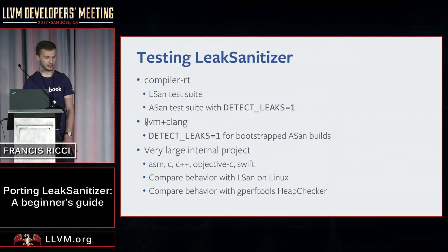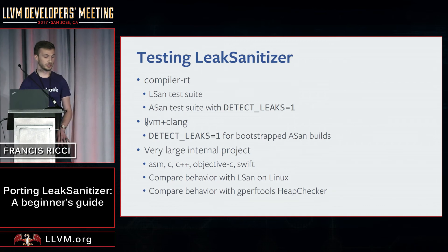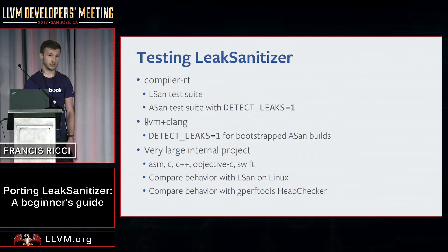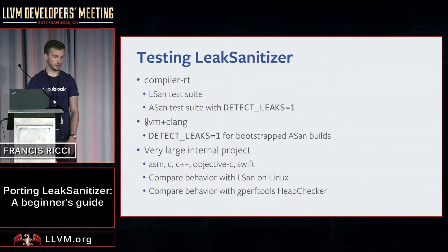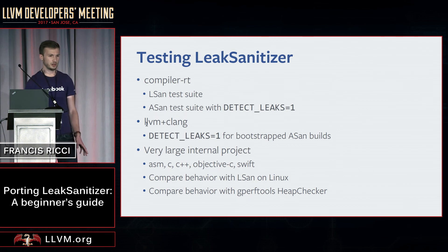Once we have a port of leak sanitizer, there are a few incrementally increasing steps you can use to test the port. First, enable the leak sanitizer test suite from CompilerRT — it's a pretty small test suite but covers common use cases and common bugs. The next step is to enable leak checking in the address sanitizer test suite, which is quite a bit bigger and covers a solid amount of use cases. Finally, for Darwin, we run bootstrapped ASAN builds of LLVM and Clang on the build bots, so I enabled leak detection on those bootstrap builds as well. At that point, if you aren't seeing any false positives and the performance looks okay, you can be pretty sure the port at least works on C++ code because LLVM and Clang are pretty big and the test suite is pretty extensive.